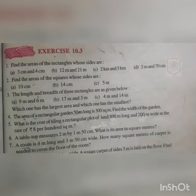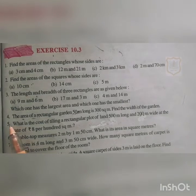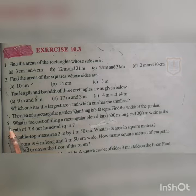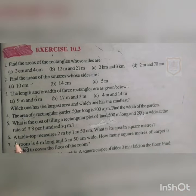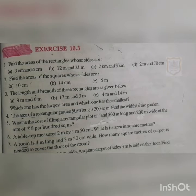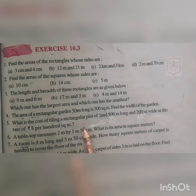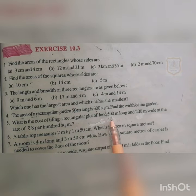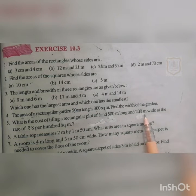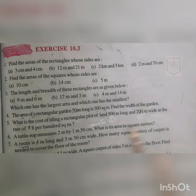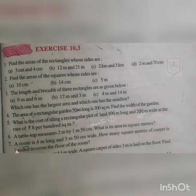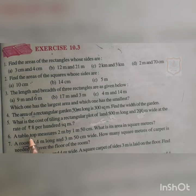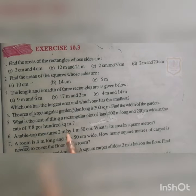Question number 5: What is the cost of tiling a rectangular plot of land 500 meters long and 200 meters wide at the rate of 8 rupees per 100 square meters? The length and breadth of the plot are given, and the tiling cost is 8 rupees per 100 square meters. First we will find the area of this plot, then multiply it by the rate.